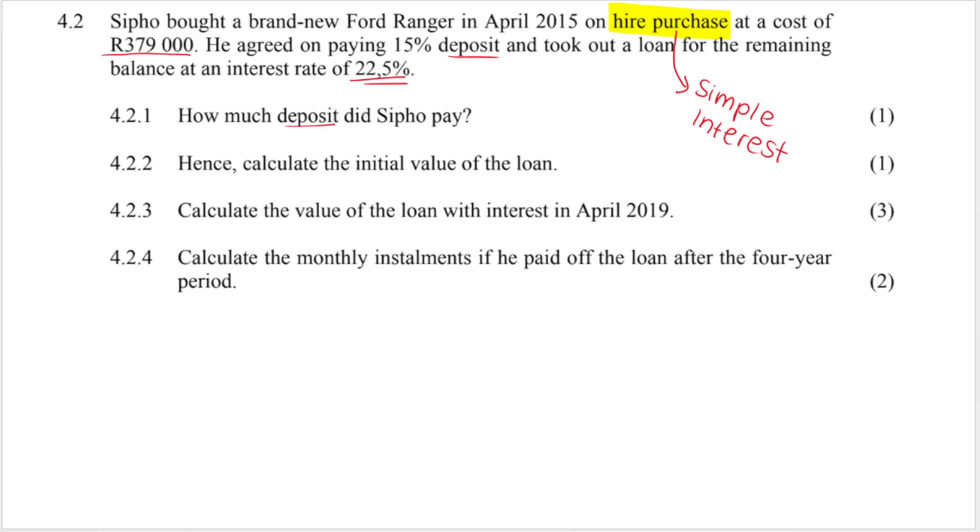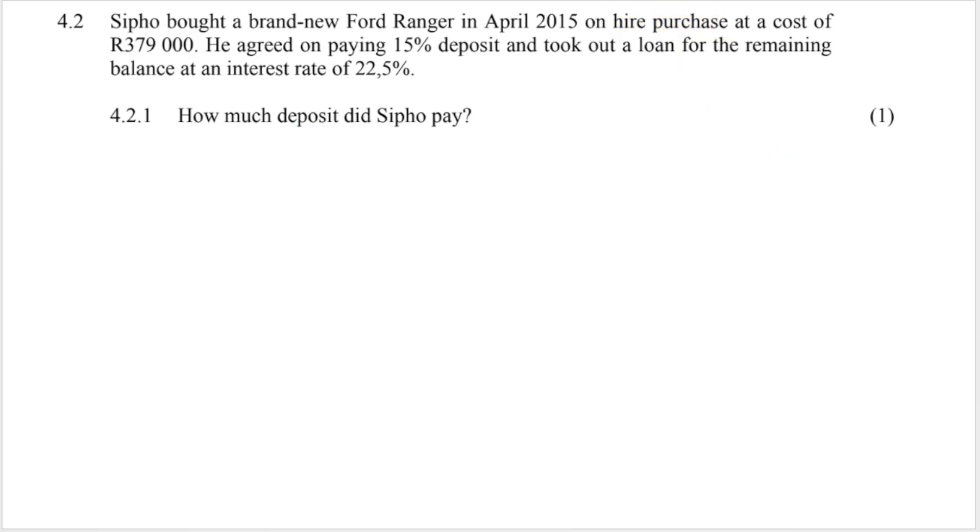So the balance is the leftover amount and they give me the interest rate. Remember it's simple interest. So first question how much deposit must he pay? Deposit is a percentage of the total amount. So it's 15% deposit. So essentially it is 15% of your total like that and then you can work it out.